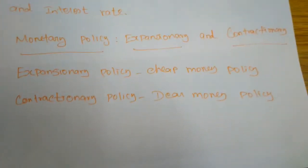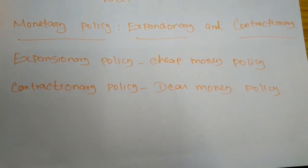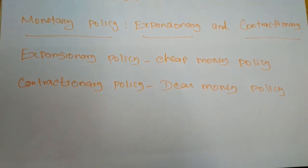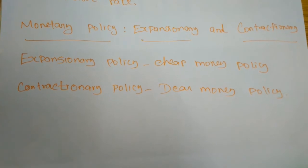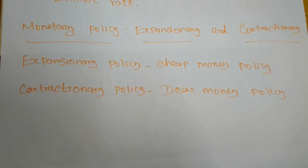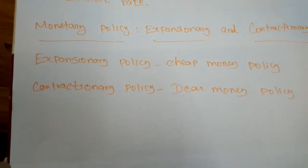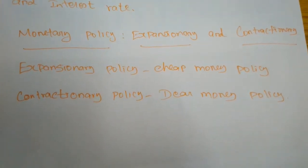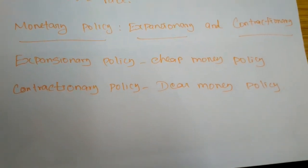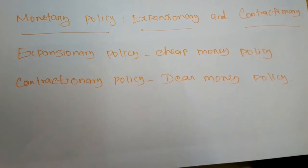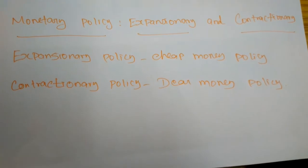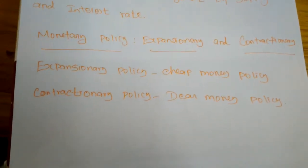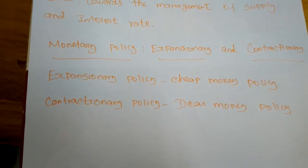Whenever there is inflation, the Reserve Bank of India brings in contractionary policies — otherwise called dear money policies — by increasing the rate of interest. As a result, people and entrepreneurs are unable to borrow money because of the high rate of interest. The contractionary monetary policy can lead to increased unemployment and depressed borrowing and spending by consumers and businesses. By undertaking dear money policies, everything can become uncontrolled, which can eventually result in an economic recession if implemented too vigorously.